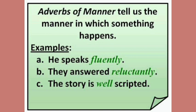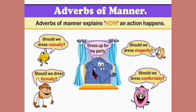For example: He speaks fluently — how does he speak? He speaks fluently. They answered reluctantly — how did they answer? They answered reluctantly. The story is well scripted — how is the story scripted? The story is well scripted. So adverbs of manner tell us how an action is carried out or how something is happening.